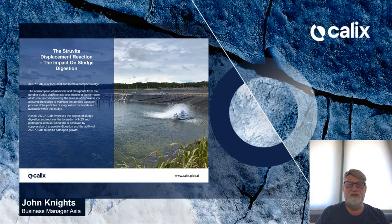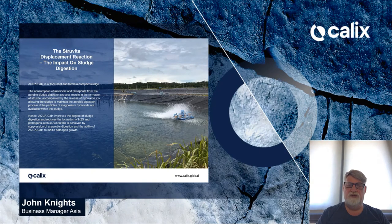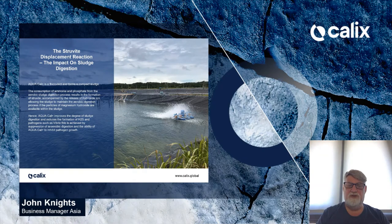The struvite displacement reaction and its impact on sludge digestion: Aquacal forms a compact sludge. The aerobic digestion has ammonia and phosphate as major byproducts. The generation of ammonia and phosphate from the aerobic sludge digestion processes results in the formation of struvite, accompanied by the release of hydroxide ions, allowing the sludge to maintain the aerobic digestion process. If particles of active magnesium are available within the sludge, this reaction takes place. Hence, Aquacal reduces ammonia and phosphate in the system while improving the degree of sludge digestion and reduces the formation of hydrogen sulfide and pathogens such as Vibrio.